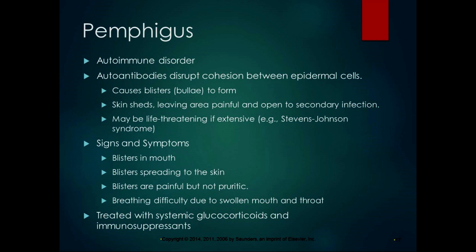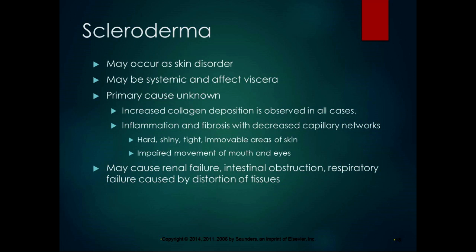Pemphigus is an autoimmune disorder in which autoantibodies disrupt the cohesion between epidermal cells, causing blisters called bullae to form. The skin sheds and leaves a painful area open to secondary infection; it can be life-threatening if extensive. Stevens-Johnson syndrome is a life-threatening form of it. Signs and symptoms include blisters in the mouth spreading to the skin, painful but not itchy lesions, and difficulty breathing due to swollen mouth and throat — requiring emergency care. Treatment is systemic glucocorticoids and immunosuppressants.